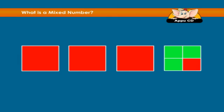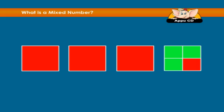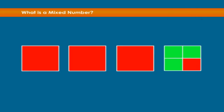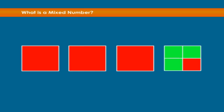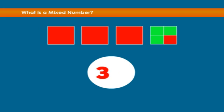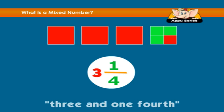How much of these squares is red? There are three whole squares and one fourth of another square. We write it like this: three, one slash four, and read it like three and one fourth.